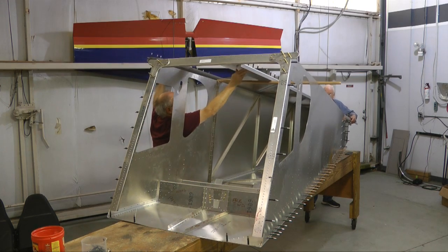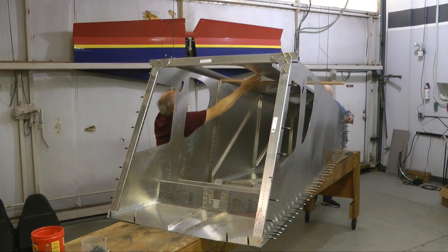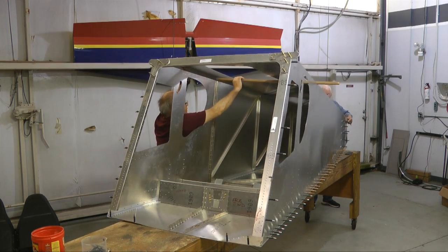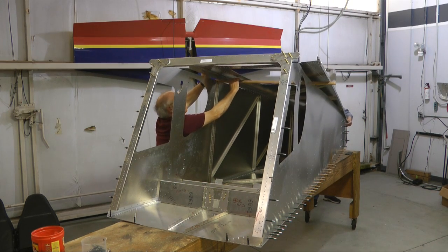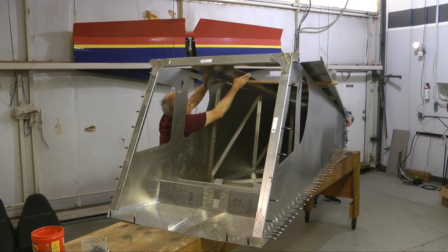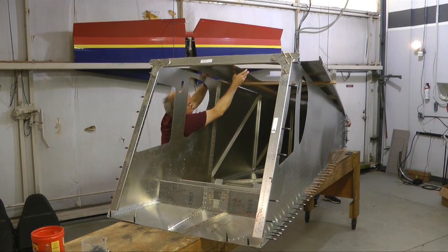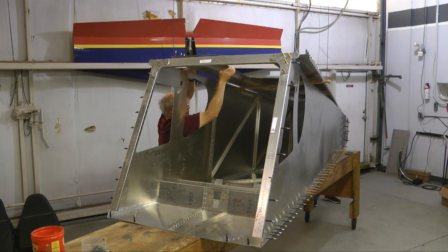Now, we're going to add the topskin. Notice we're placing boards across the top which helps support the topskin as we line it up and then we'll just pull those boards out.